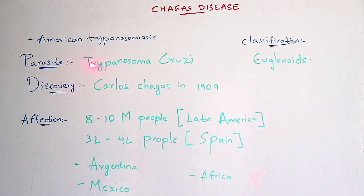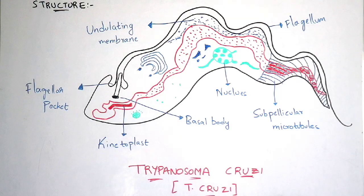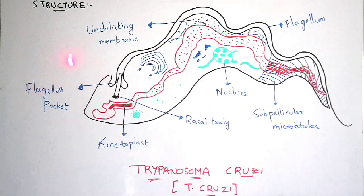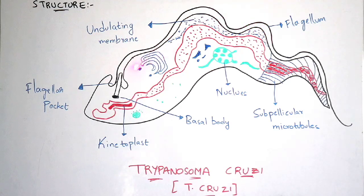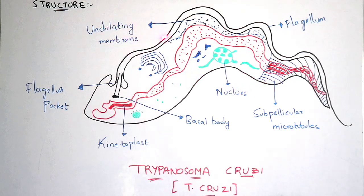Now let us discuss about the structure of Trypanosoma cruzi. It comes under the classification of Euglenoids. Here is the flagellar pocket, and this is the kinetoplast. Here is the basal body. This is the undulating membrane, and here is the flagellum — the thread-like structure drawn here. The flagellum is attached to the body of Trypanosoma with the help of the undulating membrane.